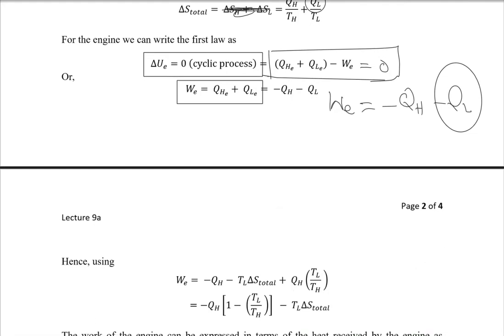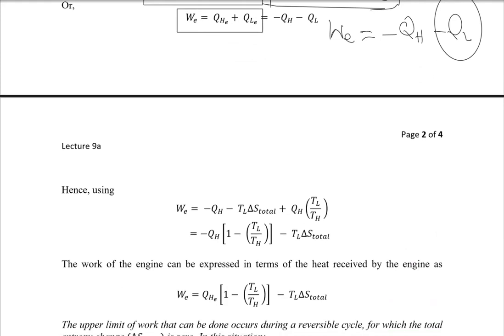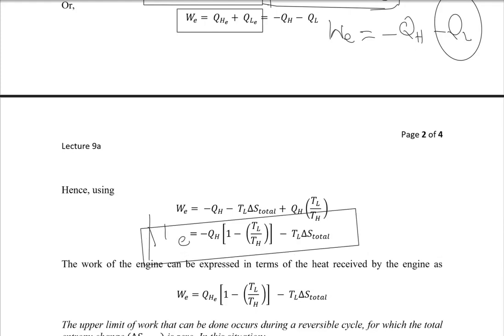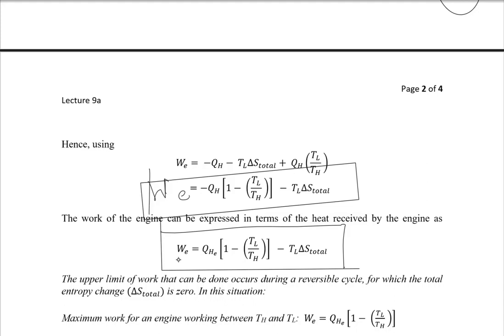Rearranging further and substituting Q_HE back, the work done equation for the heat engine becomes: W_E = −Q_HE(1 − T_L/T_H) − T_L · ΔS_total. This equation expresses the limitation on work done supplied by the heat engine working between two reservoirs under the second law of thermodynamics.